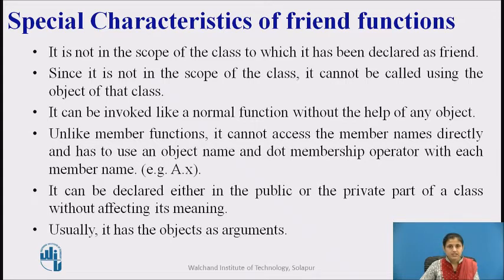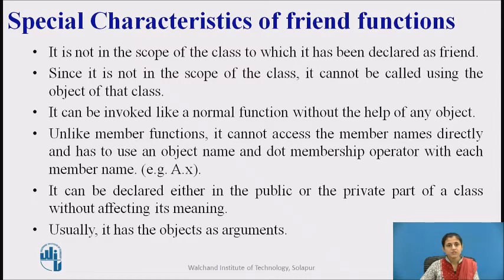Friend functions have some special characteristics. It is not in the scope of the class to which it has been declared as friend, so it cannot be called using the object of that class. It can be invoked like a normal function without the help of any object. Unlike member functions, it cannot access member names directly and must use an object name and dot membership operator with each member name — for example, a.x, where a is the object and x is a data member. It can be declared in either the public or private part of a class without affecting its meaning, and it usually has objects as arguments.